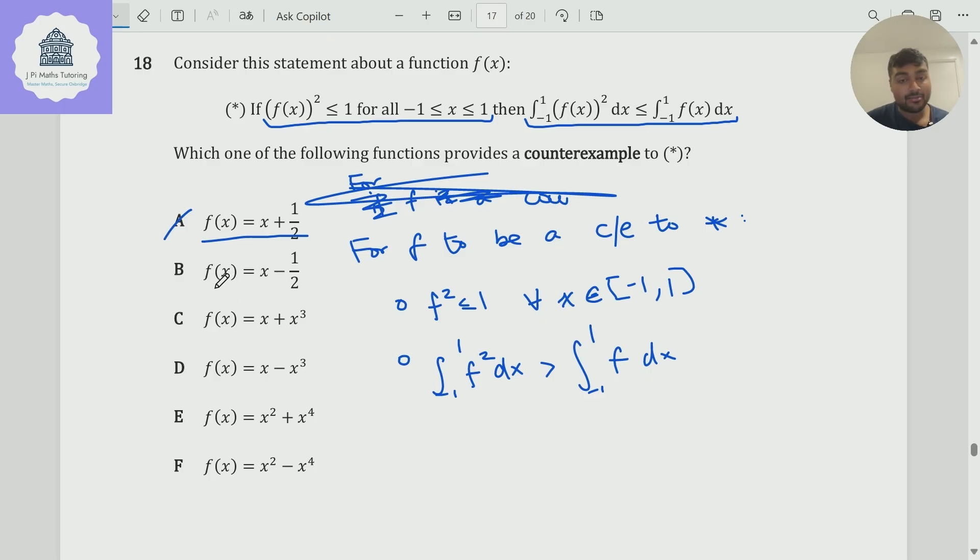Similarly, f(x) for B, if I substitute x is minus one, I get minus three over two, so I can get rid of that. Similarly, for C and E, if I sub in x is one, f(x) will be two. If I square that, that's bigger than one.